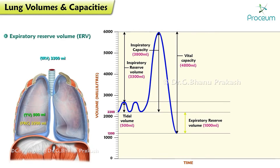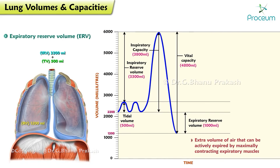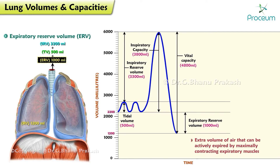Expiratory reserve volume: the extra volume of air that can be actively expired by maximally contracting the expiratory muscles, beyond that normally passively expired at the end of a typical resting tidal volume. Average value of expiratory reserve volume is 1,000 milliliters.